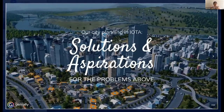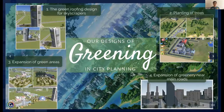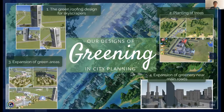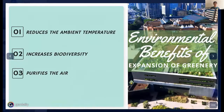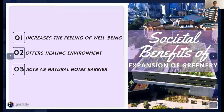Our solutions for noise and greening in city IOTA include green roofing designs for skyscrapers, planting of trees, and expansion of green areas near main roads. These act as natural noise barriers and absorb carbon dioxide from vehicles. Environmental benefits include reducing ambient temperature, increasing biodiversity, and purifying the air. Social benefits include increasing well-being, offering healing environments, and acting as natural noise barriers.